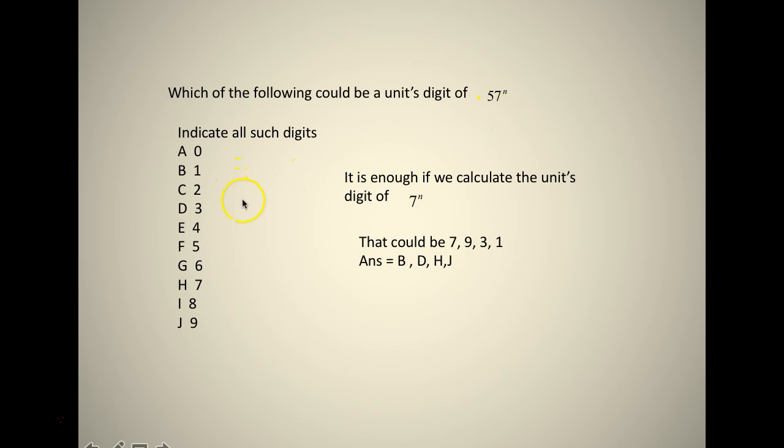7 raised to 1 is 7. 7 squared is 49, so 9 is an option. 7 cubed is 343, so 3 is an option. 7 raised to 4, look at 3 times 7 which is 21, so 1 is an option. 7 raised to 5, the units digit would be 1 times 7 which is already here. So the possibilities are 7, 9, 3, and 1. Your answer could be B, D, H, and G.